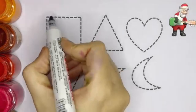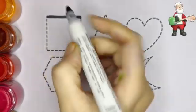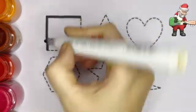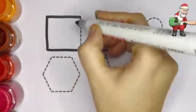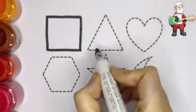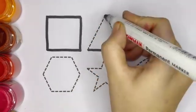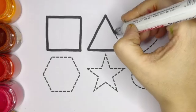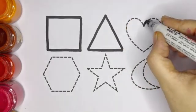Now let's draw the shapes. Square. This shape is called square. It has 4 sides and 4 corners. Triangle. Triangle has 3 sides and 3 corners.